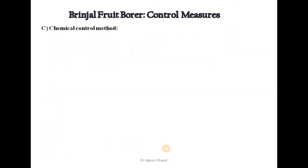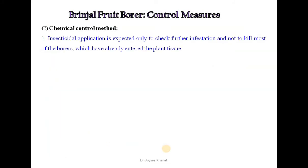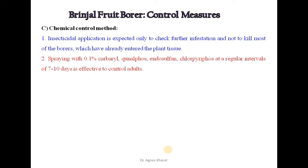Chemical control methods: insecticidal application is expected only to check further infestation and not to kill borers which have already entered the plant tissue. Spraying with 0.1% carbaryl, chlorfenvinphos, endosulfan, or chlorpyrifos at regular intervals of 7 to 10 days is effective to control adults.